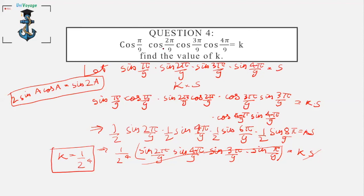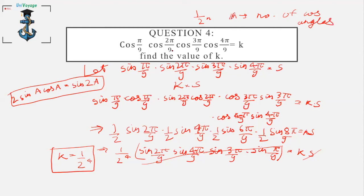There is also a shortcut for such questions: the answer is 1/2ⁿ, where n is the number of cosine angles being multiplied. So if you have 3 cosine terms multiplied, the answer will be 1/2³ = 1/8. Make a note of this.